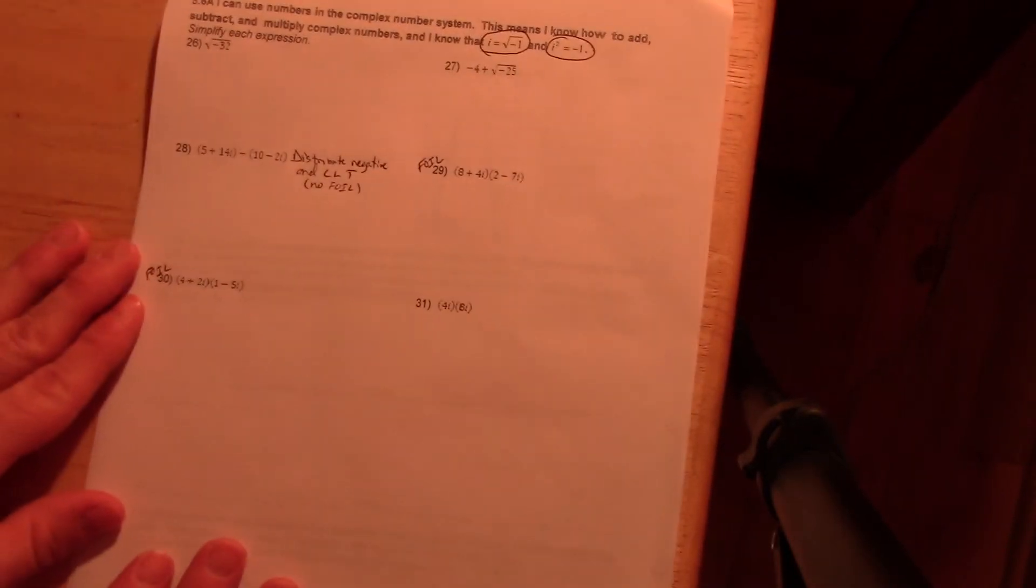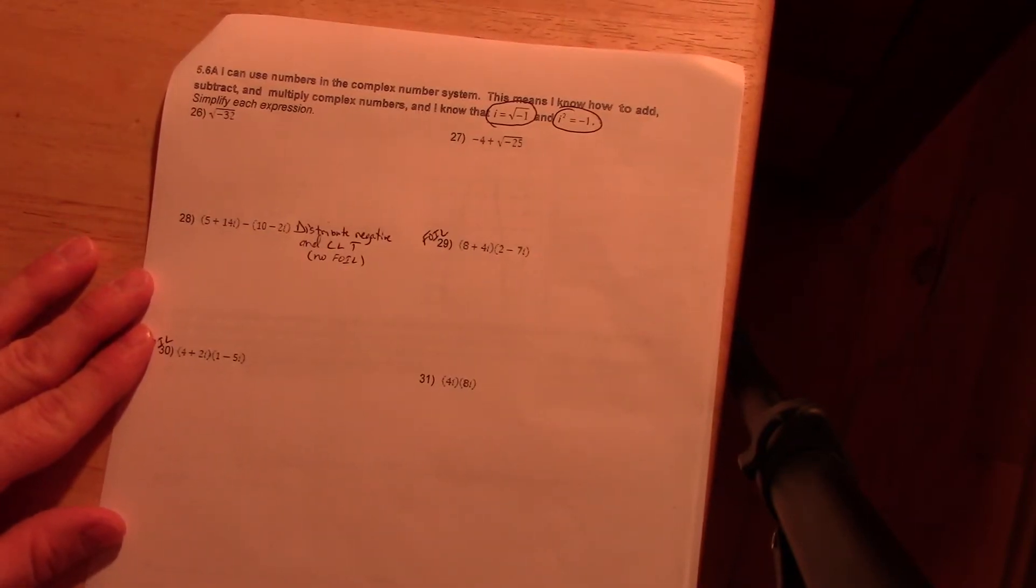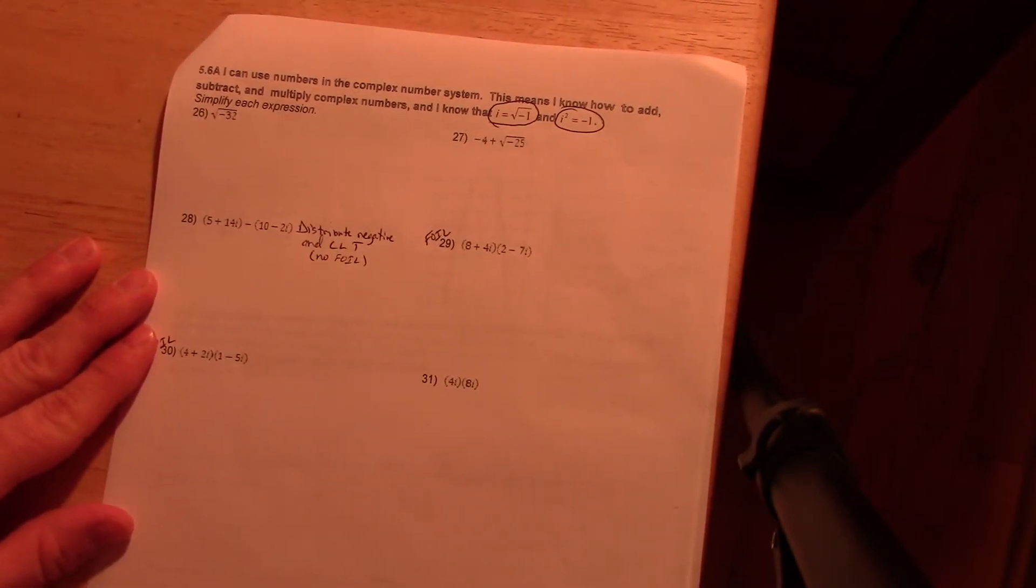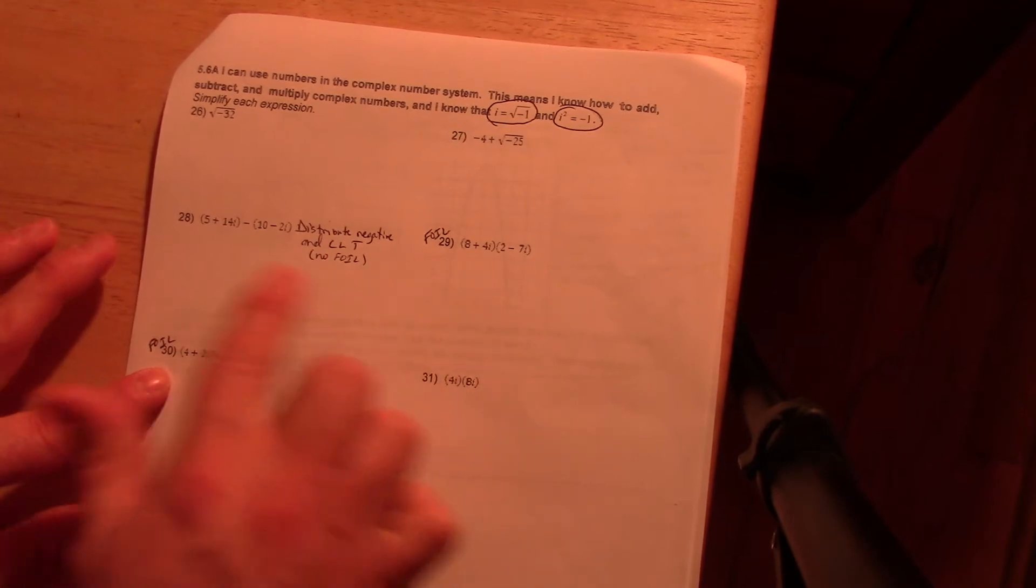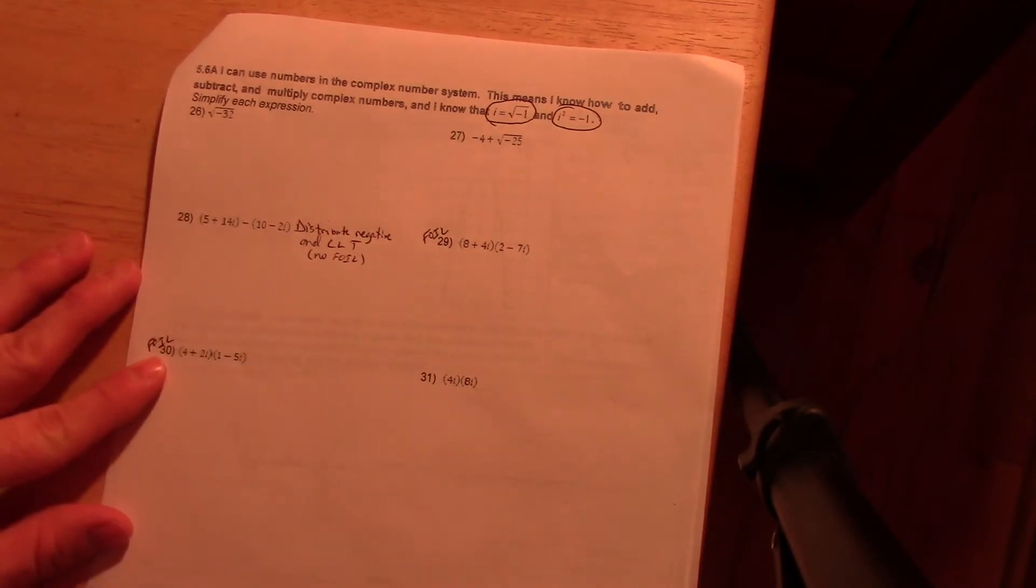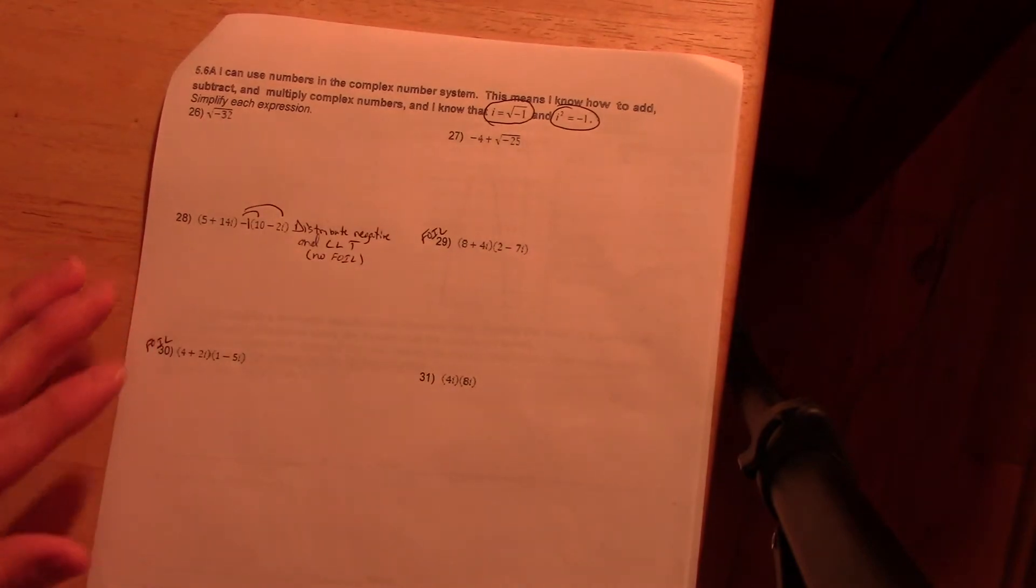We've got to do something here. Last page. I circled the very top that i is the square root of negative one and that i squared is negative one. And then what I am doing here on 28 is to distribute combined like terms and then foil on these two. I am not foiling here. This is really a negative one that is getting distributed first. We'll come back to that later.